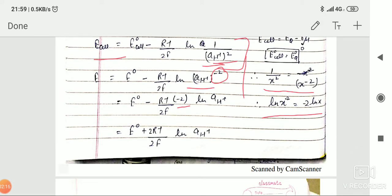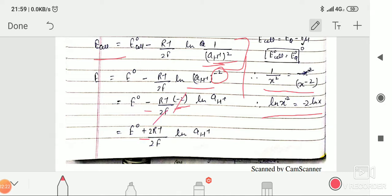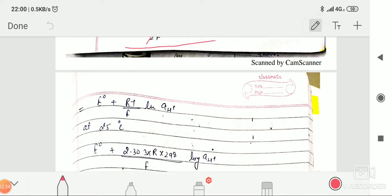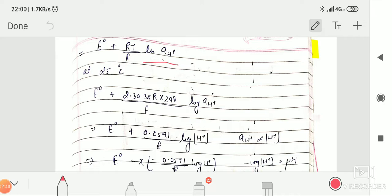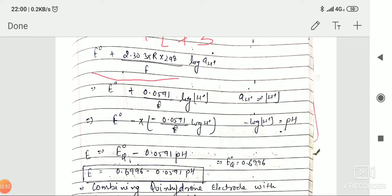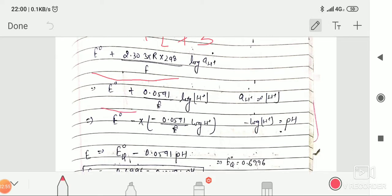This minus minus term becomes plus and 2 cancels out. Finally, E equals E naught plus RT upon F ln activity of H+. At 25 degrees Celsius, this equation can be written as E naught plus 2.303 times R times 298 (25 plus 273 becomes 298), log activity of H+, which finally becomes E naught plus 0.0591 log H+ concentration.